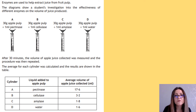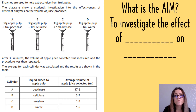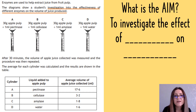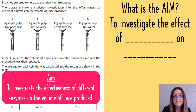The most important thing is that you read the question and identify the aim. Generally, it will be a sentence that says something like 'to investigate the effect of something on something.' Reading this question here, you can see that sentence saying it's an investigation into the effectiveness of different enzymes on the volume of juice. So the aim is to investigate the effectiveness of different enzymes on the volume of juice produced.